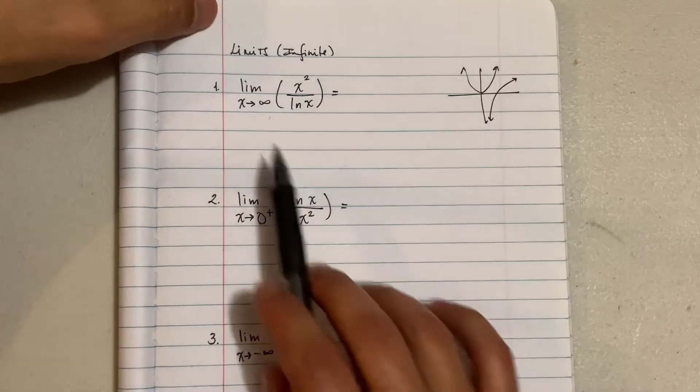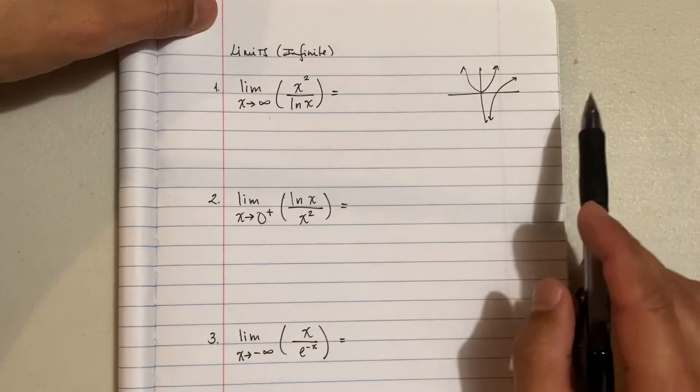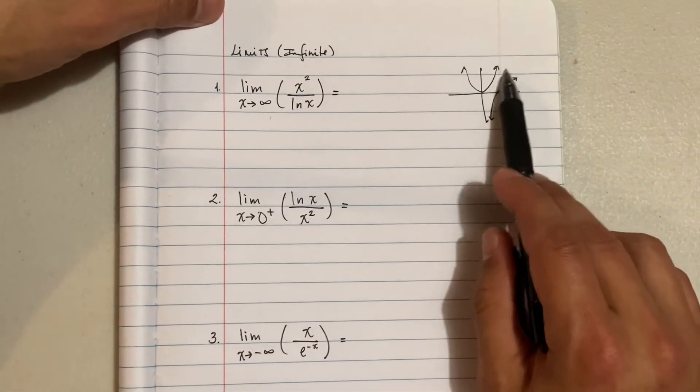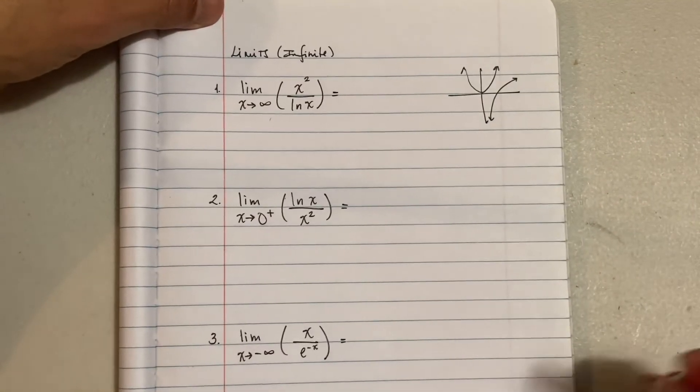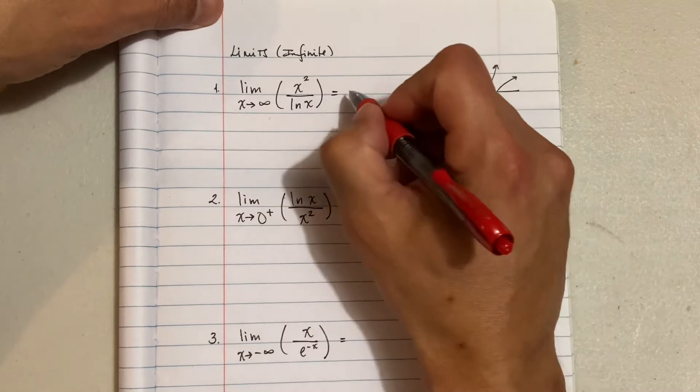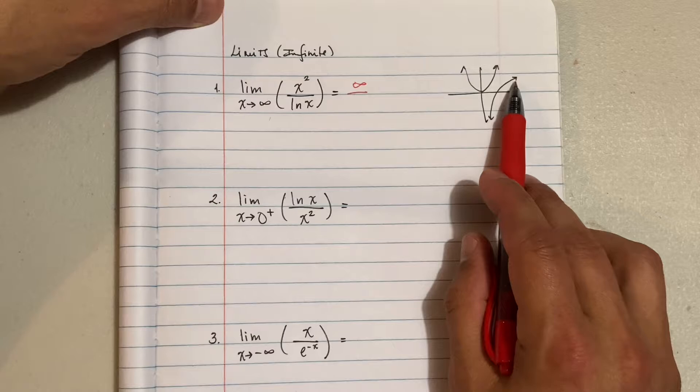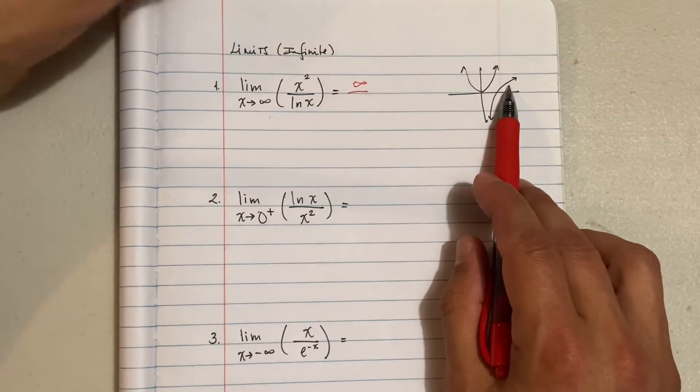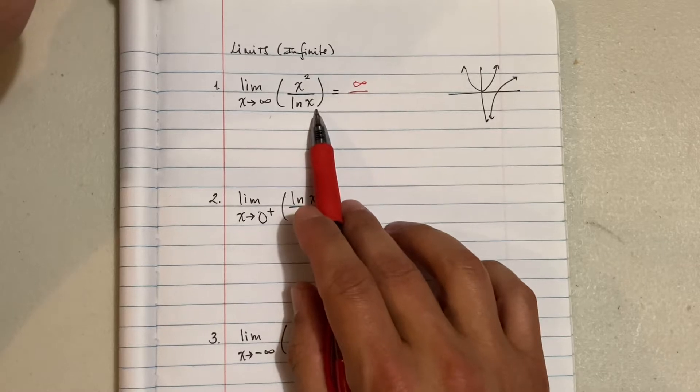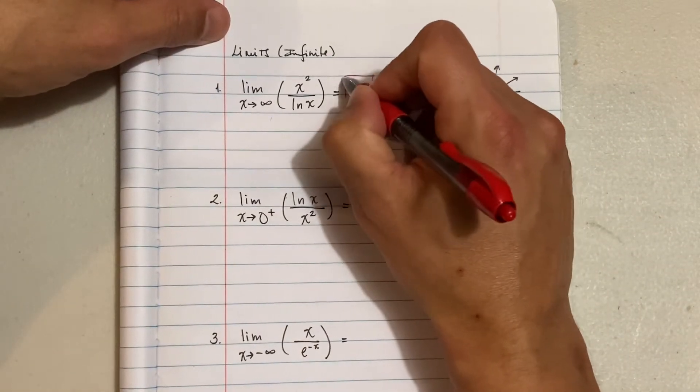But if you notice x approaches infinity, what's happening? They're both going up, right? But which one is growing faster? And hopefully you can see that, but the x squared is growing faster. So if you see here, this guy is going towards infinity. And also this guy is also going towards infinity, but it's growing a lot slower. So a very, very big number divided by a much smaller number, you're going to end up with just positive infinity.